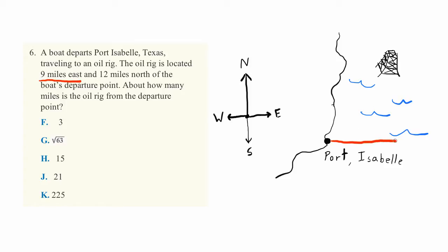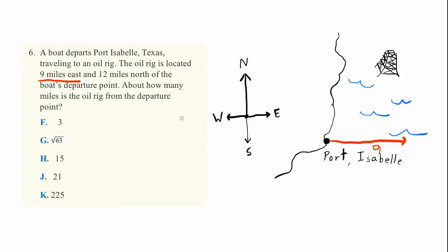So here we have a distance that we go 9 miles east and 12 miles north. So here we have 12 miles north and then we're at the oil rig. About how many miles is the oil rig from the departure point?